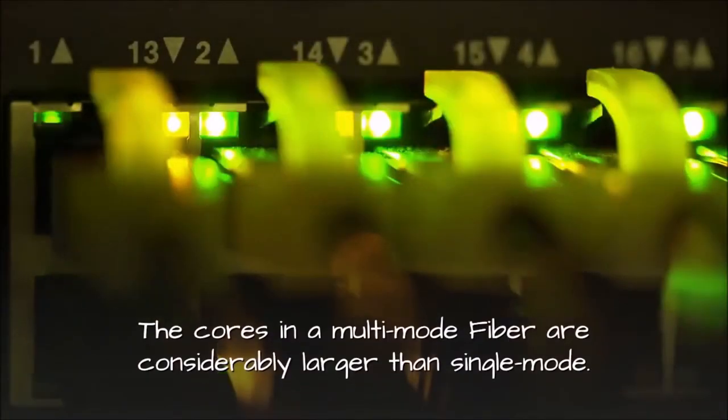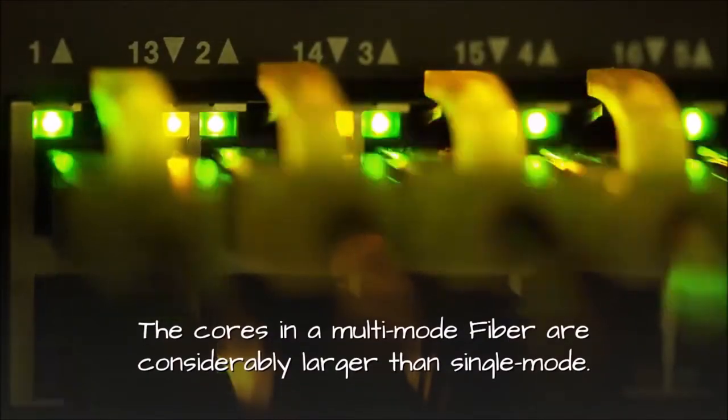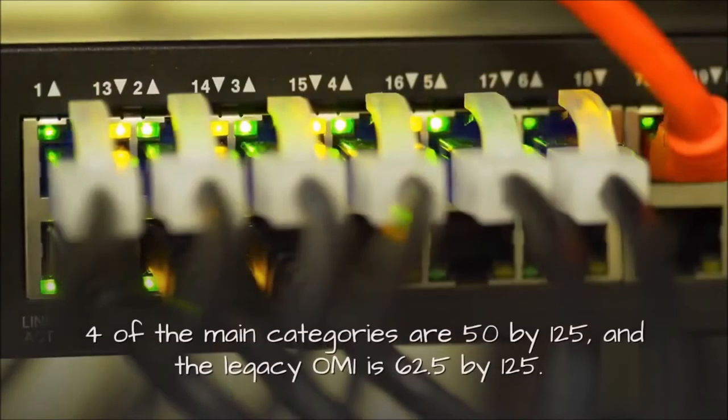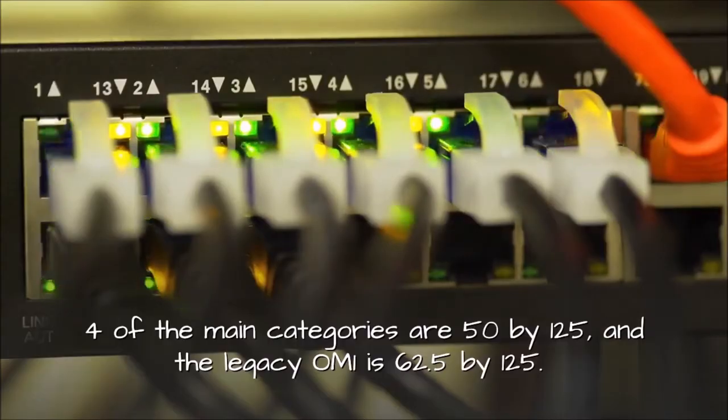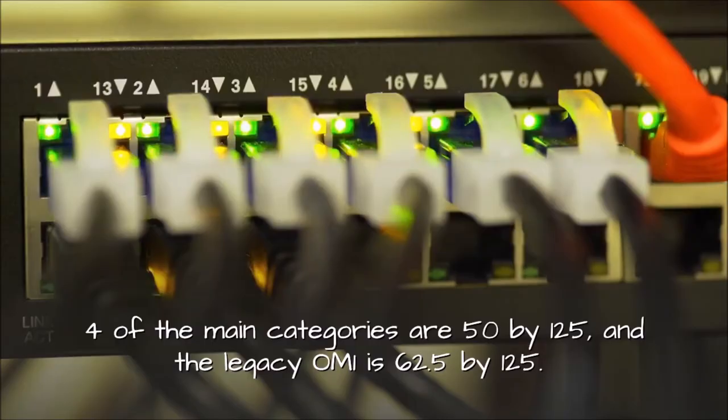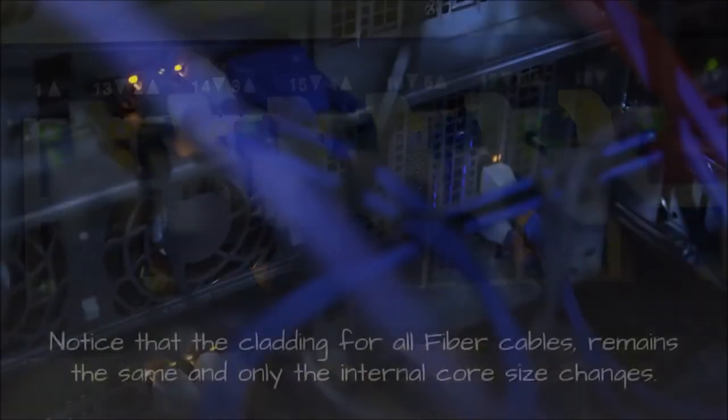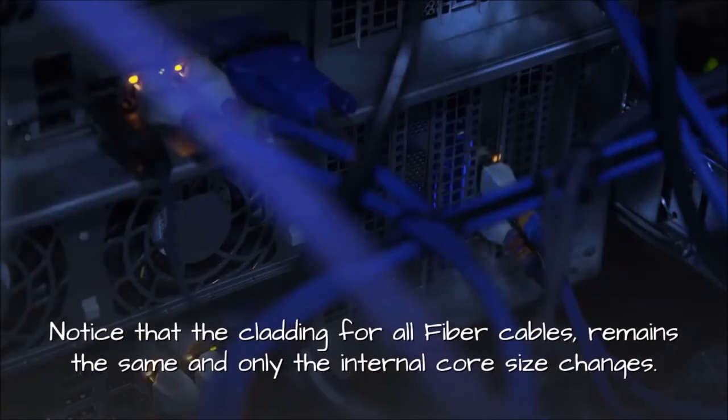The cores in a multimode fiber are considerably larger than single mode. Four of the main categories are 50 by 125, and the legacy OM1 is 62.5 by 125. Notice that the cladding for all fiber cables remains the same and only the internal core size changes.